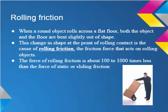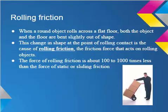Next is rolling friction. This is when an object rolls across a surface. Believe it or not, both the object and the surface are slightly bent out of shape at a very microscopic level, and this change in shape is the cause of rolling friction. For a given set of materials, the force of rolling friction is about 100 to 1,000 times less than the force of static or sliding friction. Because of this, professional movers often use wheel dollies to move heavy objects.